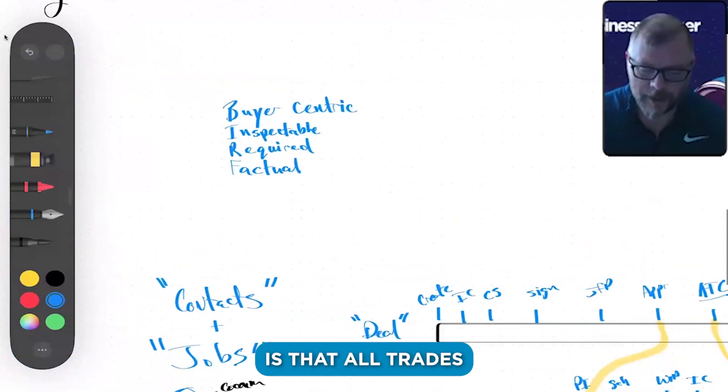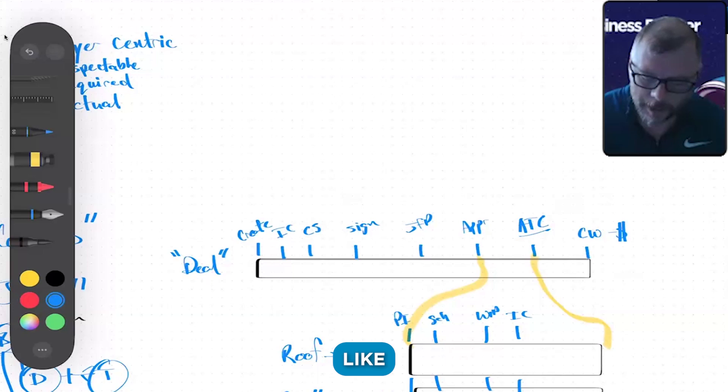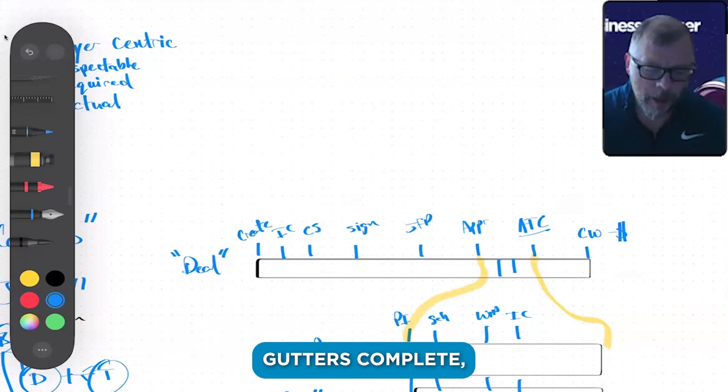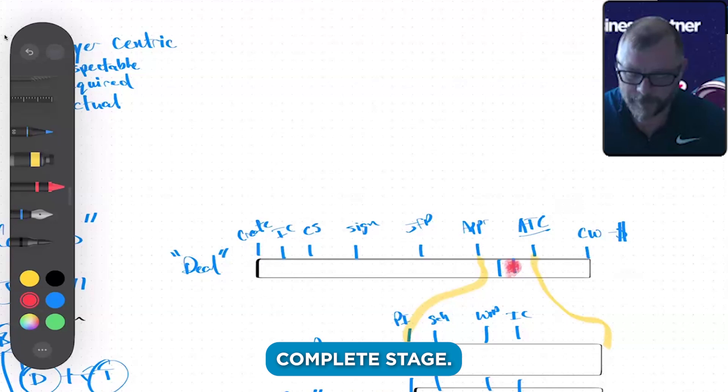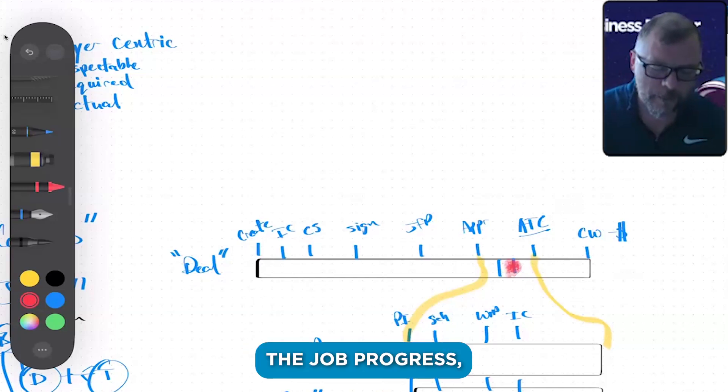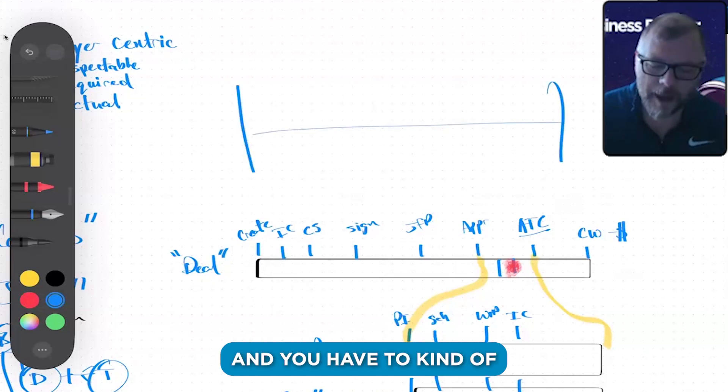But if you had some silly stages in here like 'roof's complete, gutters complete,' well not every time are you going to have a gutters complete stage. That's the issue that a lot of people have with Job Progress—that you only have one timeline.